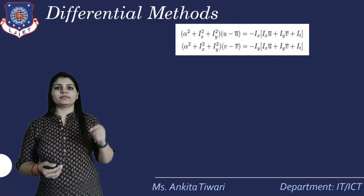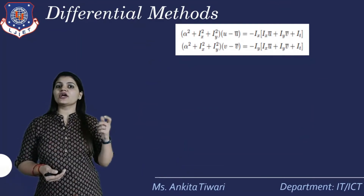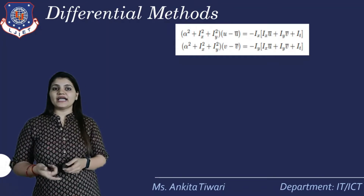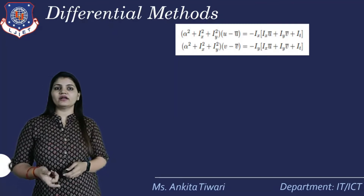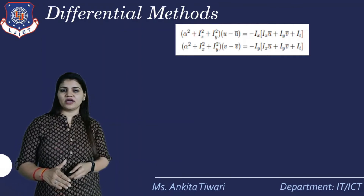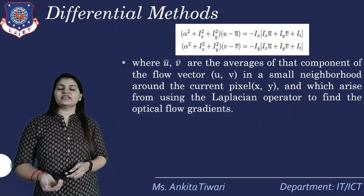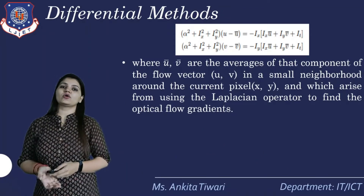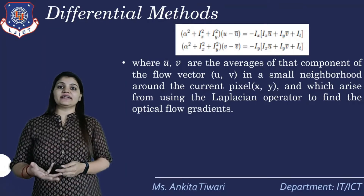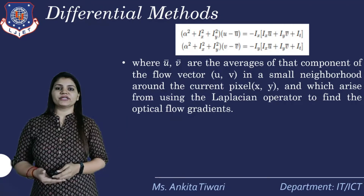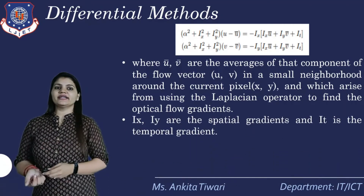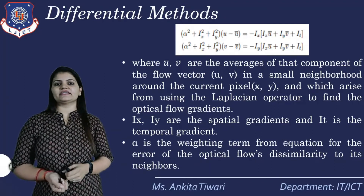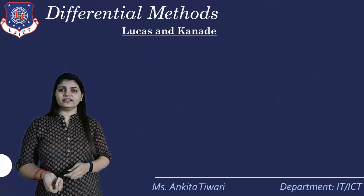We get a large system of equations for each pixel defined by: (α² + I_x²)·u − ū = −I_x·(I_x·ū + I_y·v̄ + I_t), and similarly for v. Here ū and v̄ are the averages of the u and v components of the flow vector in a small neighborhood around pixel (x, y), arising from using the Laplacian operator. I_x and I_y are the spatial gradients, I_t is the temporal gradient, and α is the weighting term for the smoothness constraint.